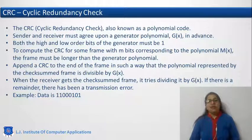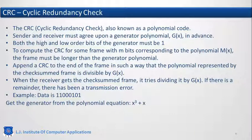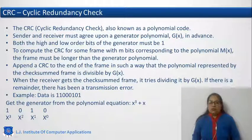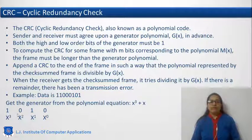Let us understand how this technique works. We have the data 11000101 and the generator polynomial is x³ + x. To convert this polynomial to binary, we take all positional values of x from x⁰ to x³. Wherever a term is present in the polynomial equation we place a 1, and wherever a term is absent we place a 0. So x³ is 1, x² is absent giving 0, x¹ is 1, x⁰ is absent giving 0 — making our generator polynomial 1010.